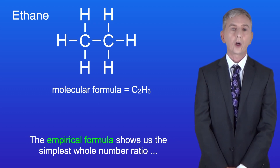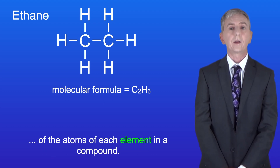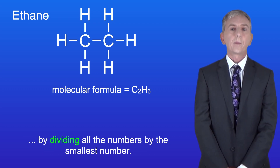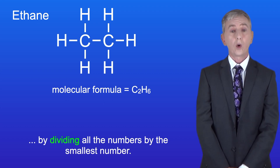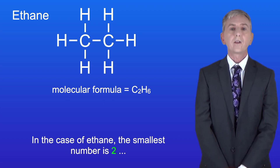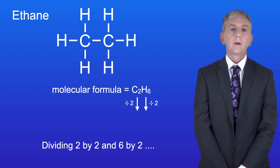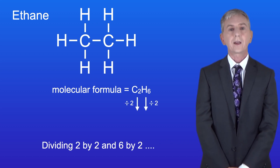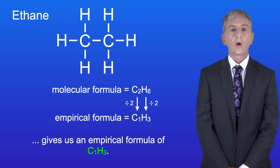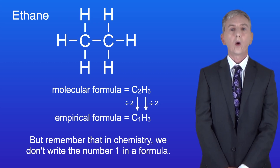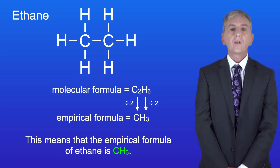The empirical formula shows us the simplest whole number ratio of the atoms of each element in a compound. We can work out the empirical formula from the molecular formula by dividing all the numbers by the smallest number. In the case of ethane, the smallest number is 2, which is the number of carbon atoms. Dividing 2 by 2 and 6 by 2 gives us an empirical formula of C1H3. But remember that in chemistry we don't write the number 1 in a formula, so the empirical formula of ethane is CH3.